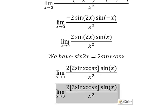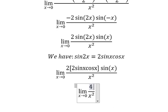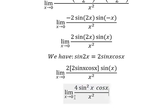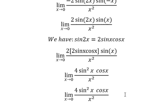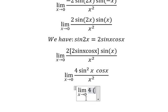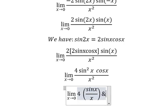If we simplify this one we will have 4 sine squared x cosine x. Next, this one we can write as 4 times (sine x over x) to the power of 2 times cosine x.